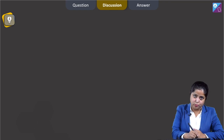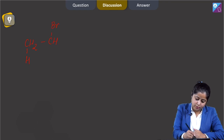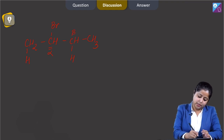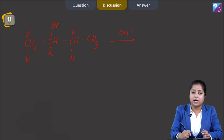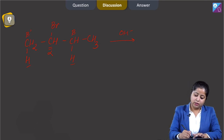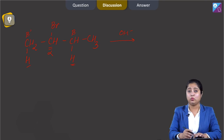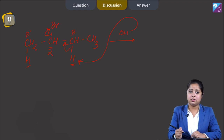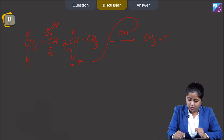The OH minus will preferentially attack on that hydrogen which gives the more substituted alkene. Let us draw the structure of 2-bromobutane: CH2, H here, CHBr, CH2, CH, and then CH3. This is the alpha carbon since the halogen is attached to it, and we have 2 beta carbons - beta and beta dash. OH minus will attack either on this hydrogen or on this hydrogen.